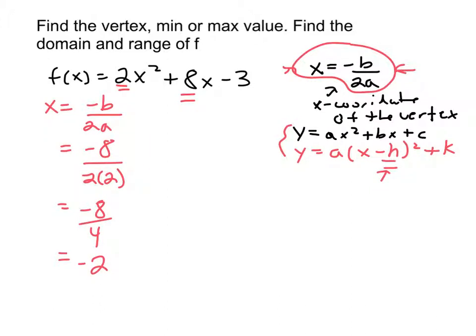All right, I need to find the y coordinate of the vertex though, right? I can't just have the x coordinate of the vertex. So to do that, I'm going to plug in negative 2 for x. So 2(-2)² plus 8 times (-2) minus 3.